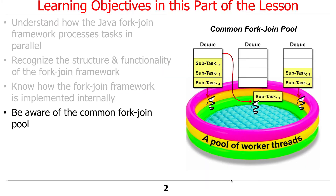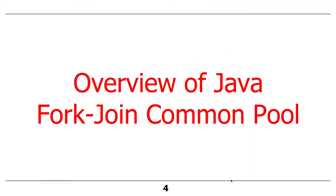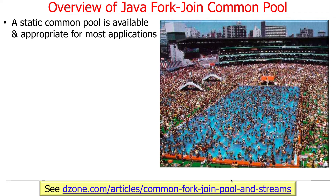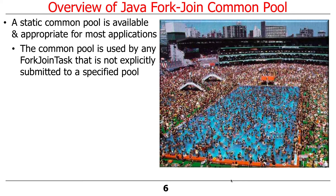Part two of this discussion is going to talk about the common fork join pool and give a quick overview. There's a common pool that's available and appropriate for many applications. All the various parts of a program that want to use something in a process will share this common fork join pool. And if you don't create a separate pool or don't specify which pool to use, it's going to use the common pool.